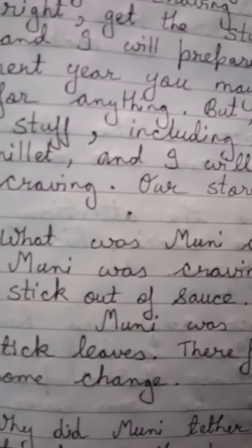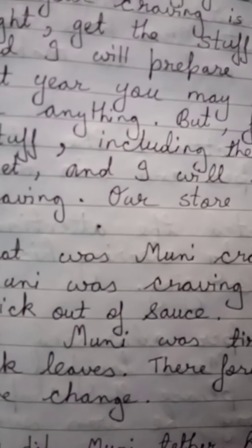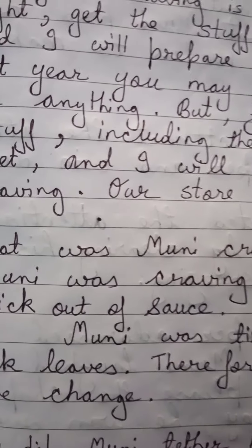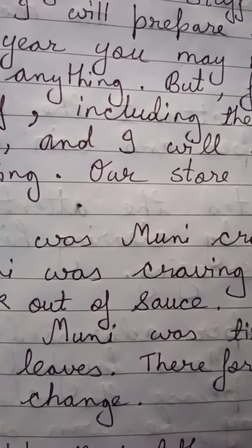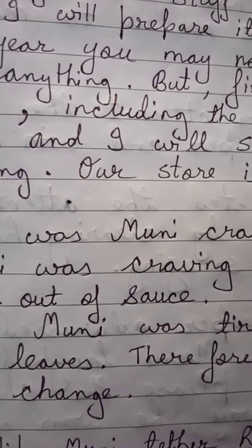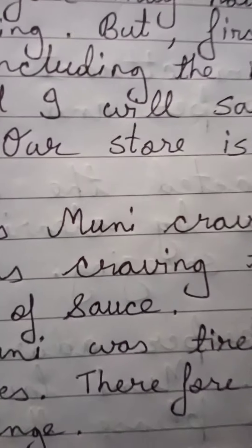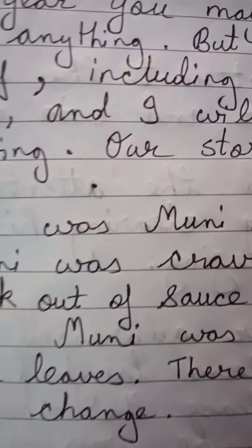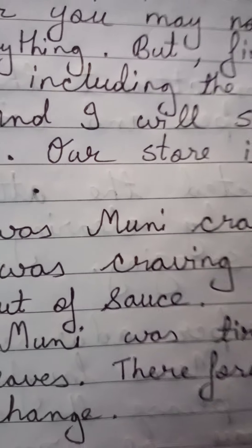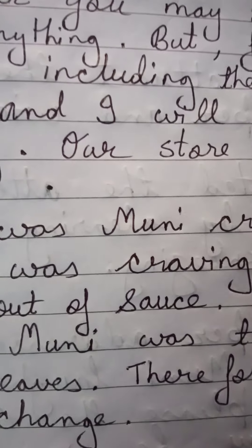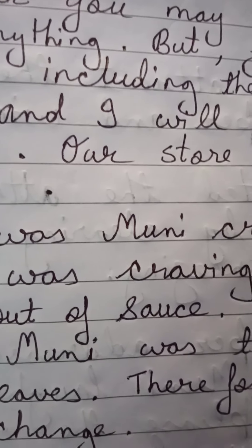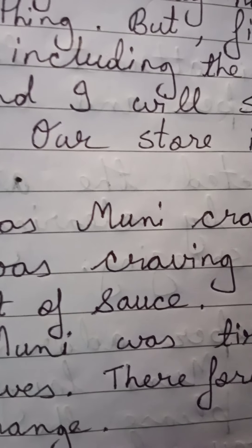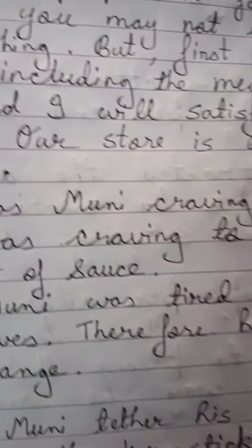Come on, let's read the extract: 'You have only four teeth in your jaw but your craving is for big things. All right, get the stuff for the sauce and I will prepare it for you. After all, next year you may not be alive to ask for anything. But first get me all the stuff, including the measure of rice or millet, and I will satisfy your unholy craving. Our store is empty today.'